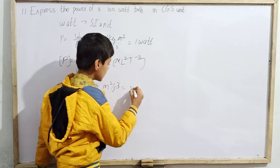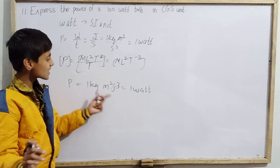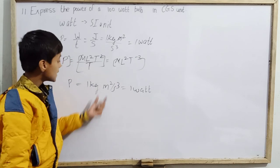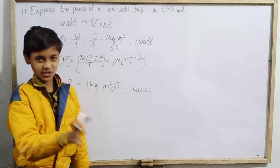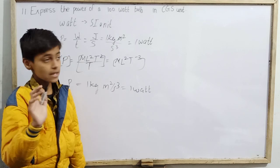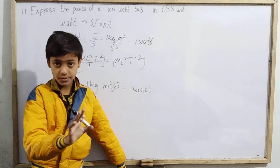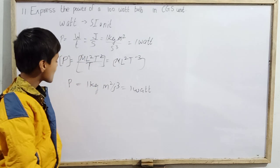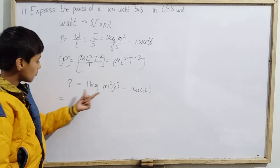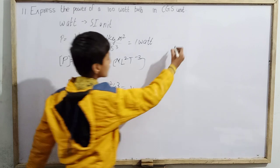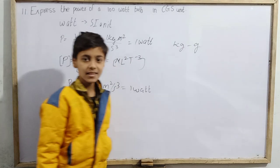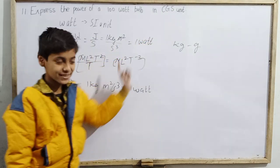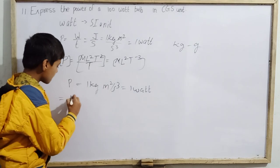If we directly transfer to CGS units: kg converts to grams, meter converts to centimeters, and seconds stay the same — because the CGS and SI unit of time are both seconds. 1 kg equals 1000 grams, that is 10³ grams. Gram is the CGS unit of mass.